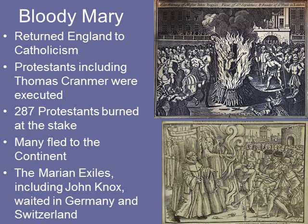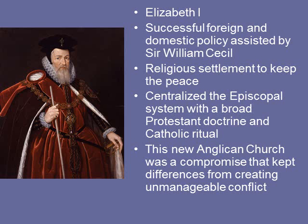Many Protestants fled to the continent. These people are called the Marian exiles. They include John Knox. They were biding their time in Germany and Switzerland, being exposed to even stronger, more extreme radical ideas.